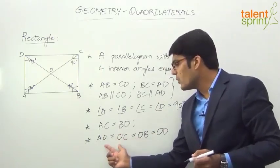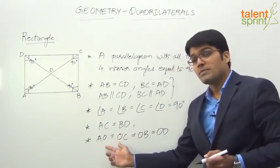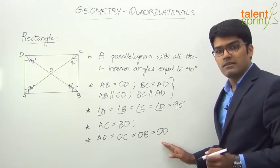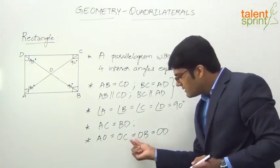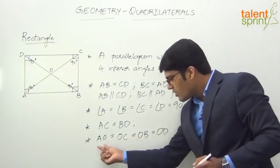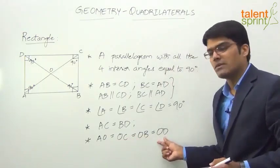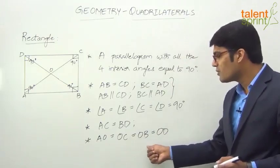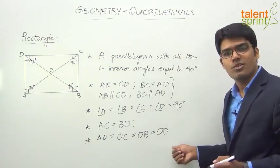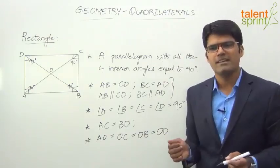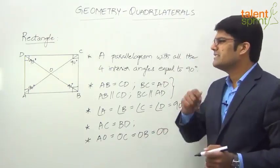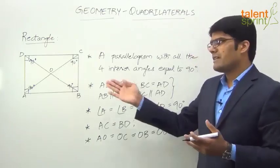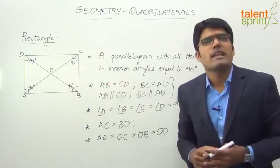In the case of a parallelogram, we had AO equals OC and OB equals OD. But here in a rectangle, since the two diagonals are equal in magnitude, all four parts of the diagonals are equal: AO equals OC equals OB equals OD. Those are the properties of rectangles.